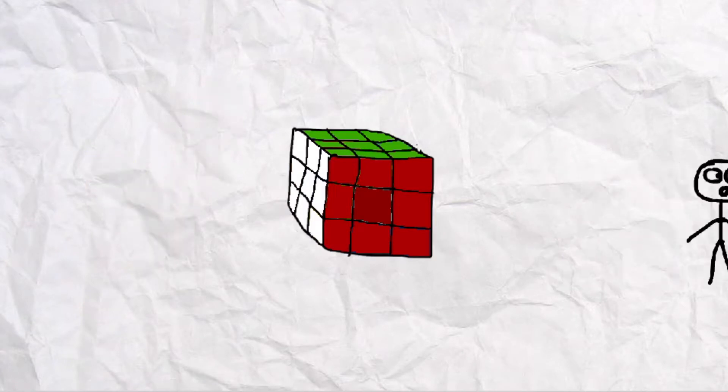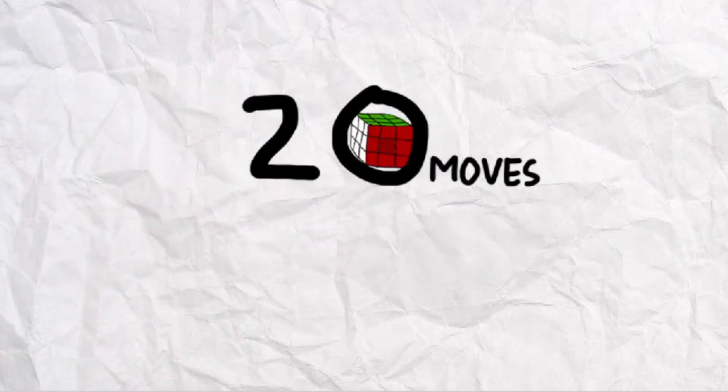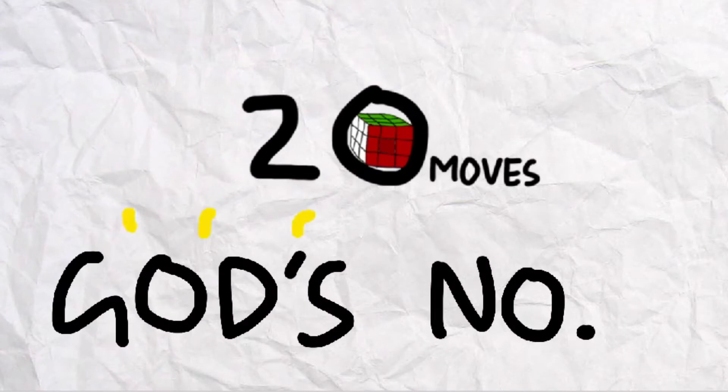But what if I told you that according to MIT researchers, 20 rotational moves were all that is needed to solve any combination from a Rubik's Cube. This is what is known as God's number.